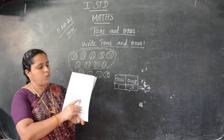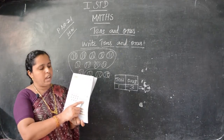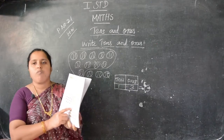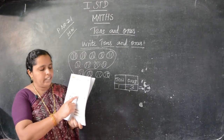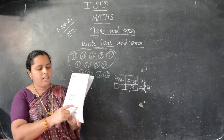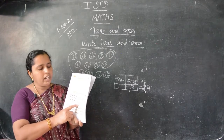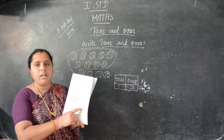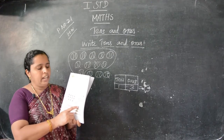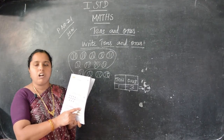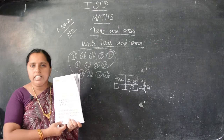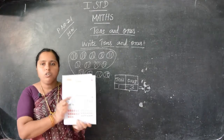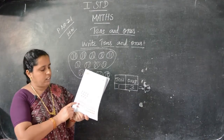How many ladies finger? First you group the 10 ladies finger. And remaining how many? 2. So in the 10s place you write 1 and in the 1s place you write 2. So here 1, here 2 — you have to write that one.